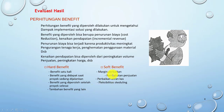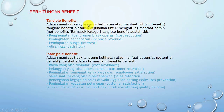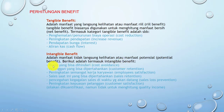Soft benefit antara lain adalah margin perbaikan, peningkatan penjualan, perbaikan aliran kas, dan fleksibilitas scheduling. Tangible benefit adalah manfaat yang langsung terlihat atau manfaat real, termasuk penghematan, penurunan biaya operasi, peningkatan pendapatan, pendapatan bunga, dan aliran kas. Intangible benefit adalah manfaat tidak langsung atau manfaat potensial, contohnya: biaya yang bisa dihindarkan, pelanggan yang bisa dipertahankan, peningkatan semangat karyawan, sales saat ini yang bisa dipertahankan, pencegahan kegagalan sales di waktu yang akan datang, dan peningkatan kepuasan pelanggan.